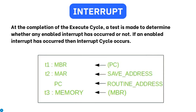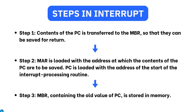Moving on, we will now talk about the interrupt cycle. At the completion of the execute cycle, a test is made to determine whether an enabled interrupt has occurred or not. If an enabled interrupt has occurred, the interrupt cycle occurs. The nature of this cycle varies greatly from one machine to another. There are three steps in this cycle. Step 1: the contents of the PC are transferred to the MBR so that they can be saved for return. Step 2: the MAR is loaded with the address at which the contents of the PC are to be saved, and the PC is loaded with the address of the start of the interrupt processing routine. Step 3: the MBR, containing the old value of the PC, is now stored in memory.